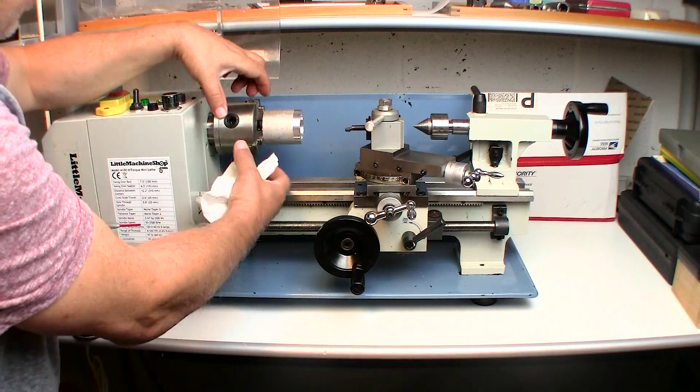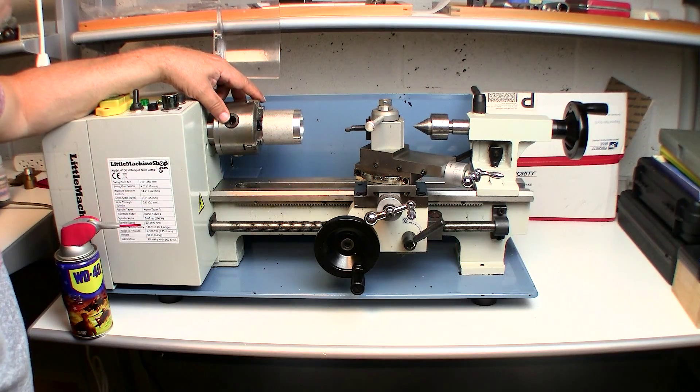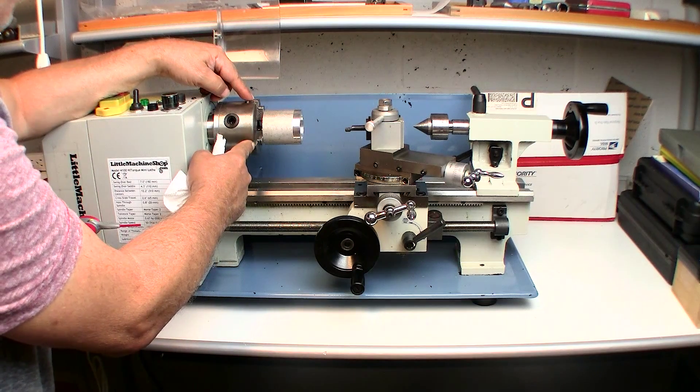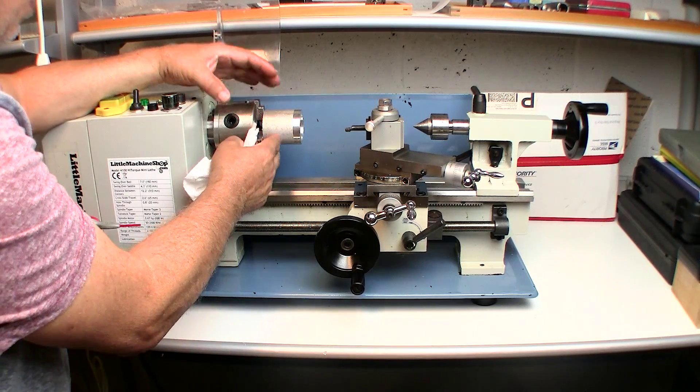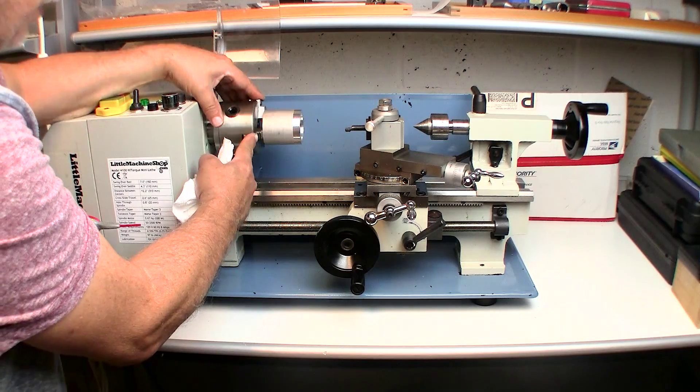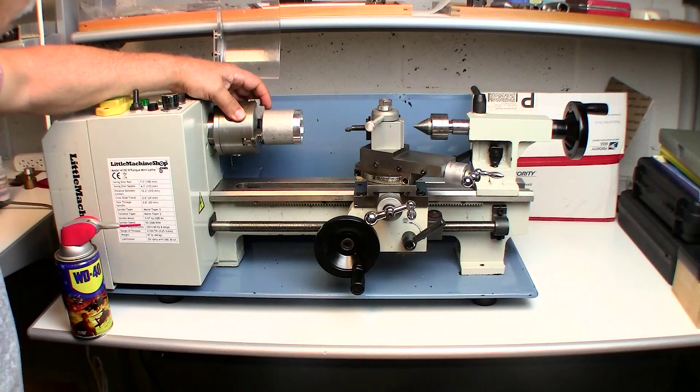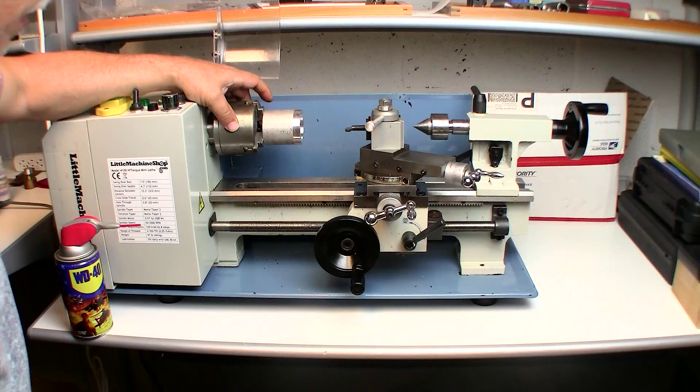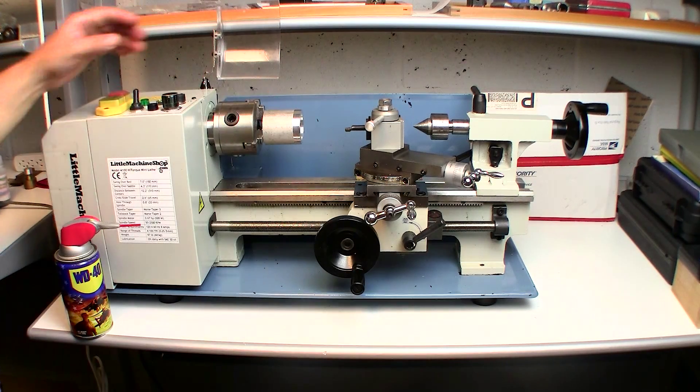You could also buy a four jaw chuck for it, which allows you to independently center your workpiece. Run out about a thousand, thousand and a half. You also have included in your purchase a set of outside type gripping jaws, which allows you to grip larger diameter workpieces. This only has the capacity of about 2 inches gripping from the inside, and if you try to grip from the actual chuck jaw faces themselves, it's actually about an inch and a half, not even total capacity.